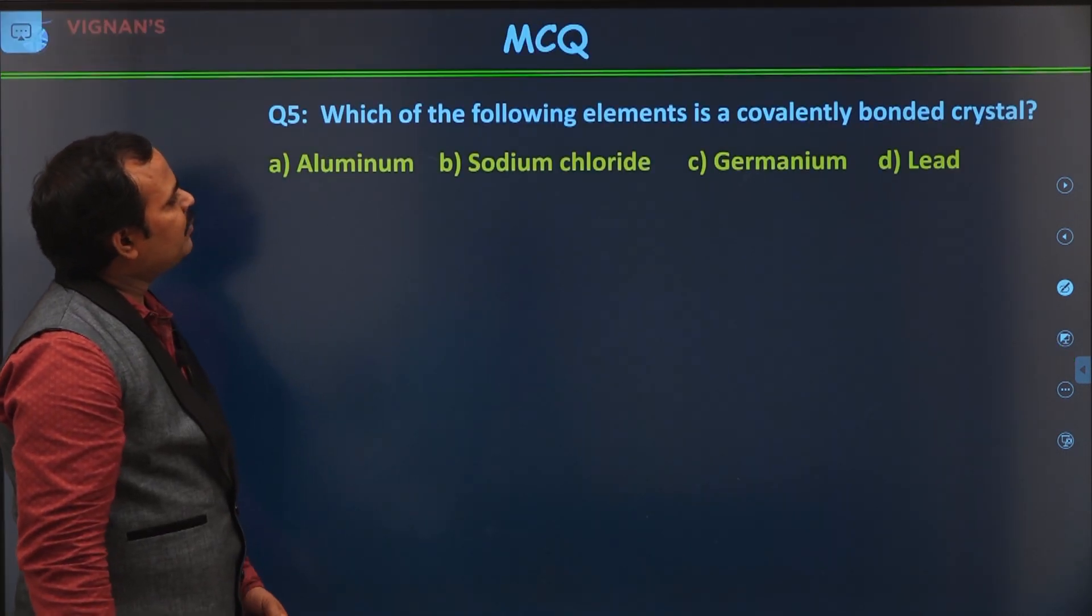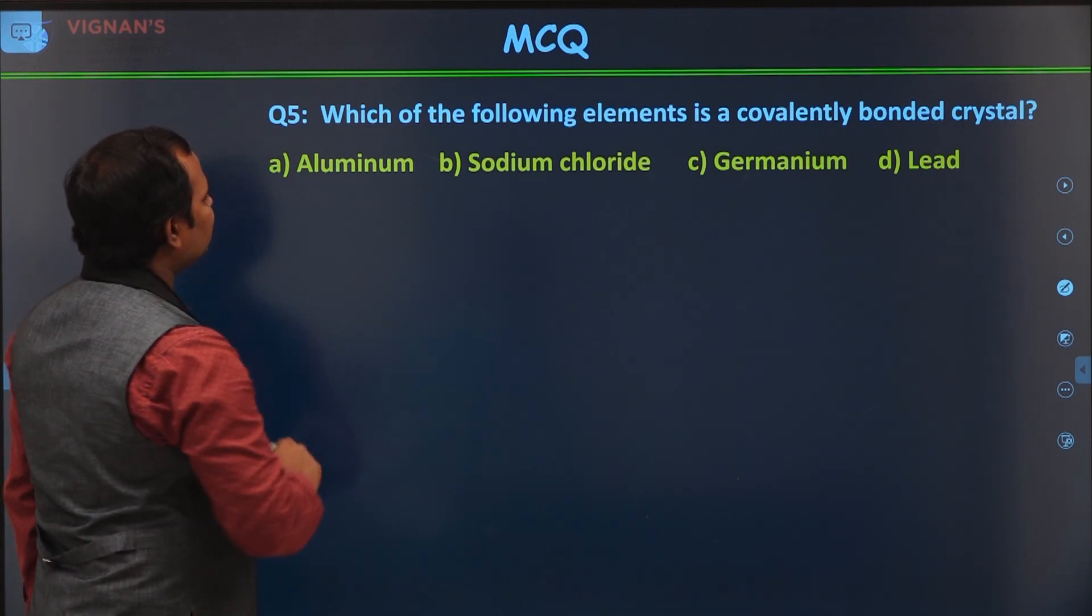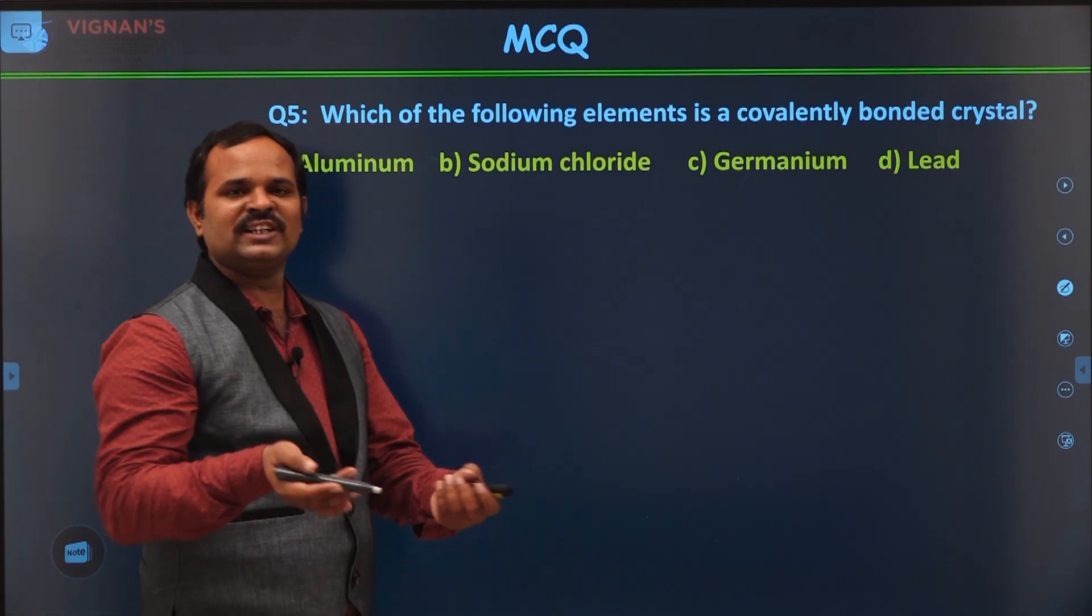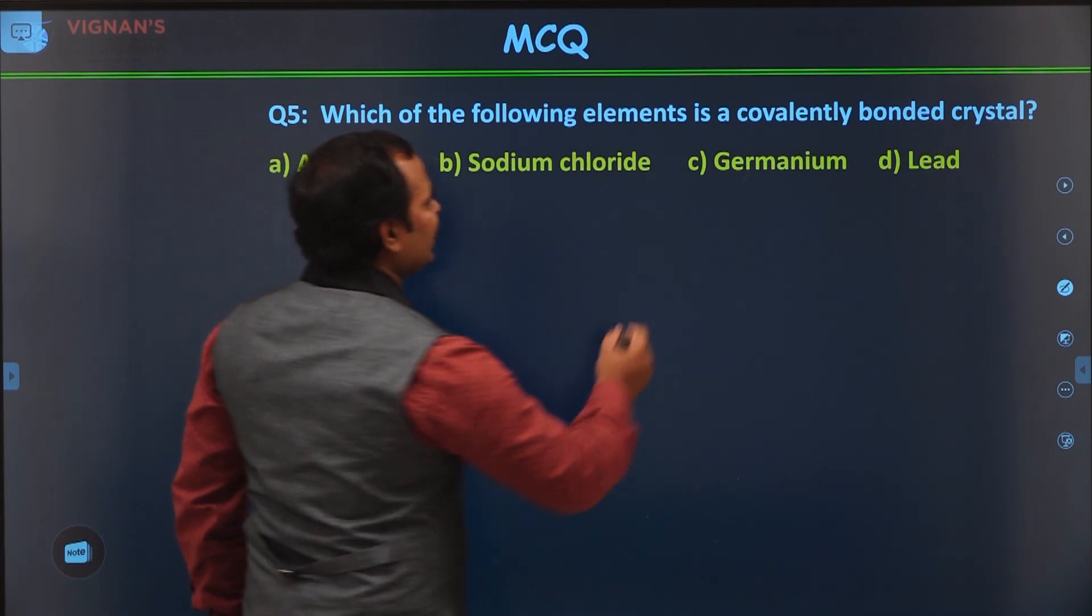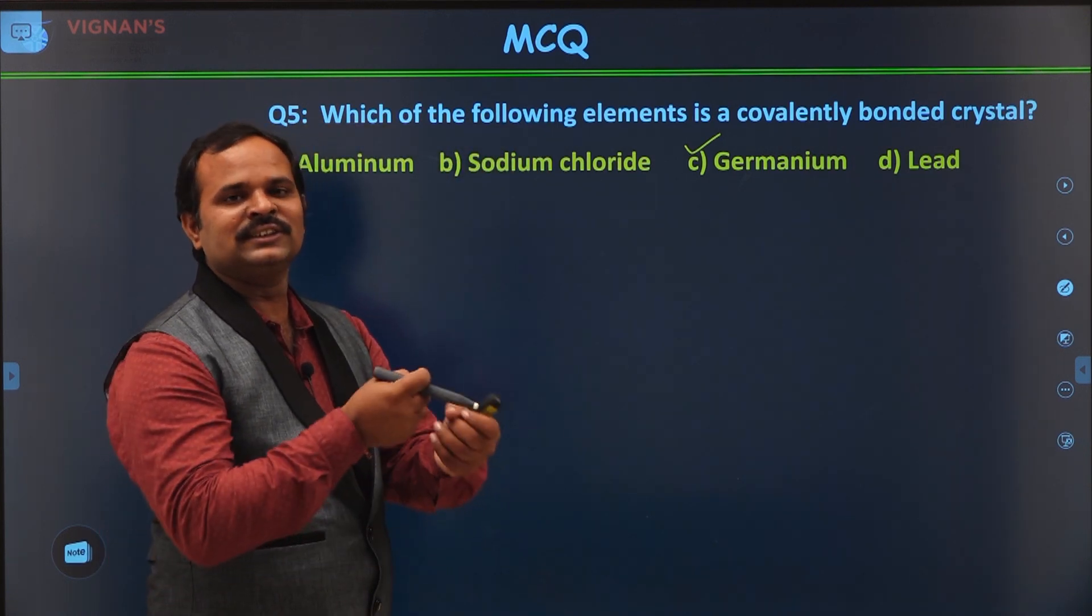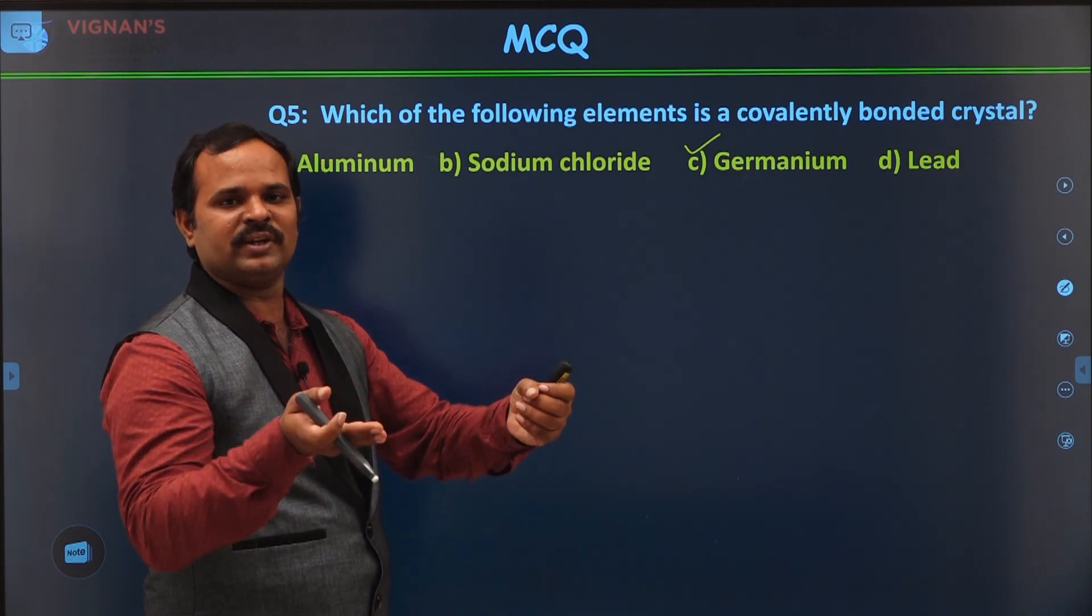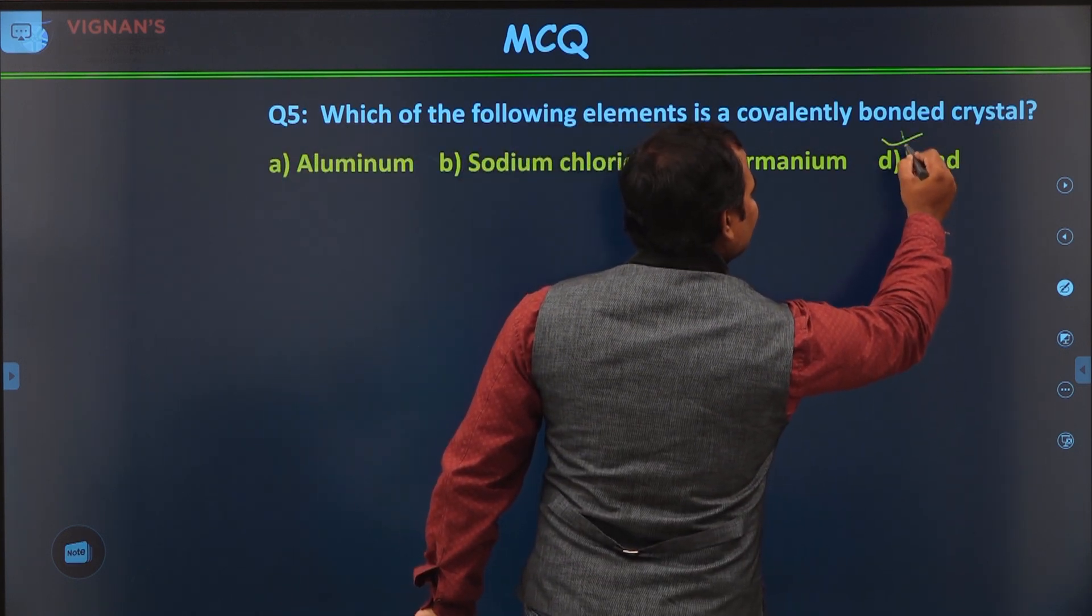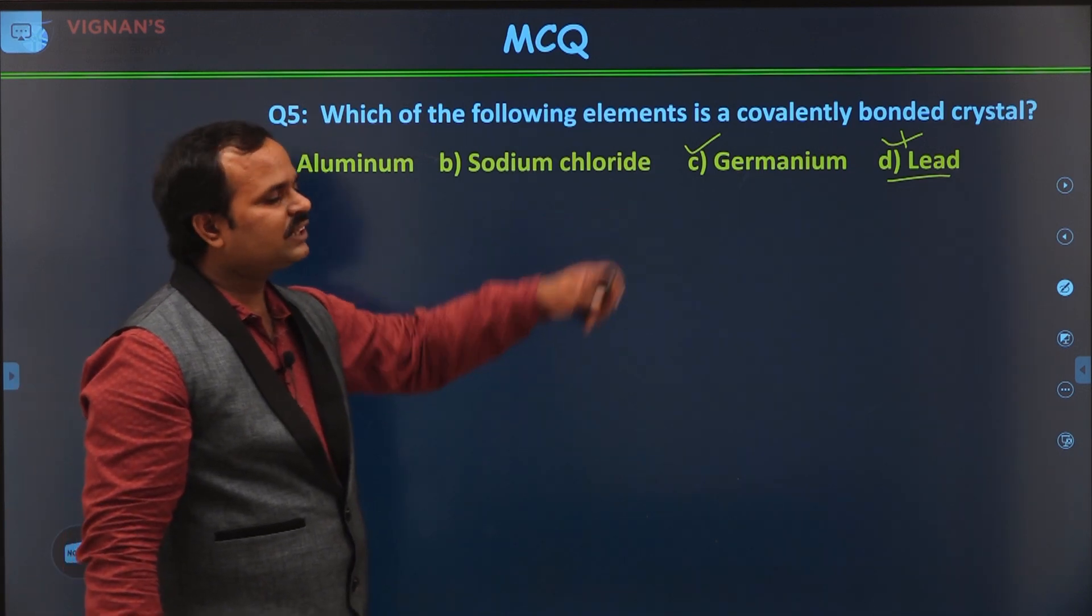Which of the following elements is a covalently bonded crystal? You can see here aluminum. Aluminum is a metal, so it is not a covalent bond. Sodium chloride is an ionic bond. Sodium plus and chlorine minus will be forming. Germanium forms a covalent bond because of the valence electrons. They share the valence electrons from one germanium to another germanium, which forms a covalent bond. And if you see lead, lead is also a heavy metal. So this doesn't form any covalent bond. So the answer is germanium.